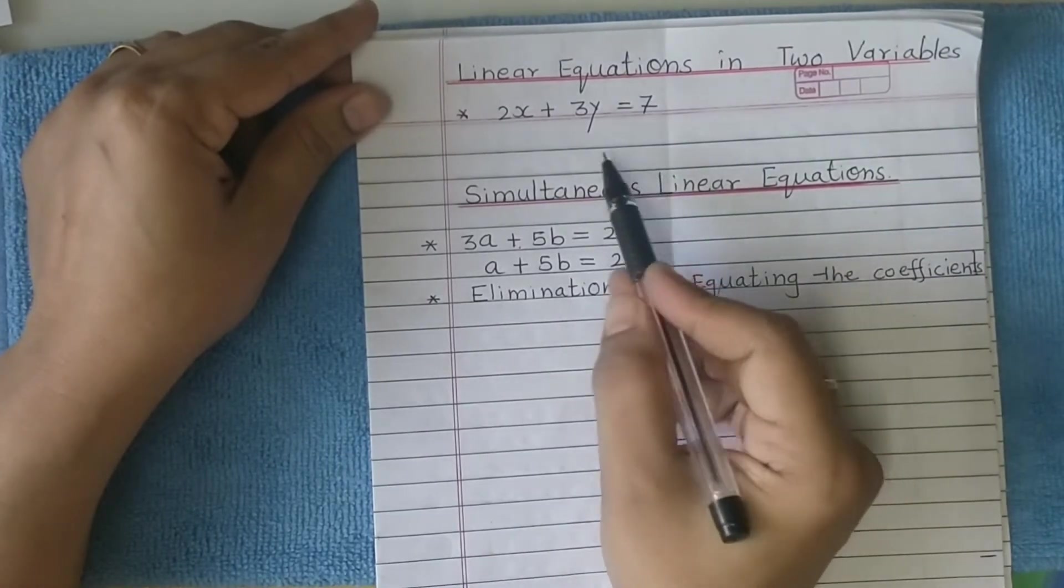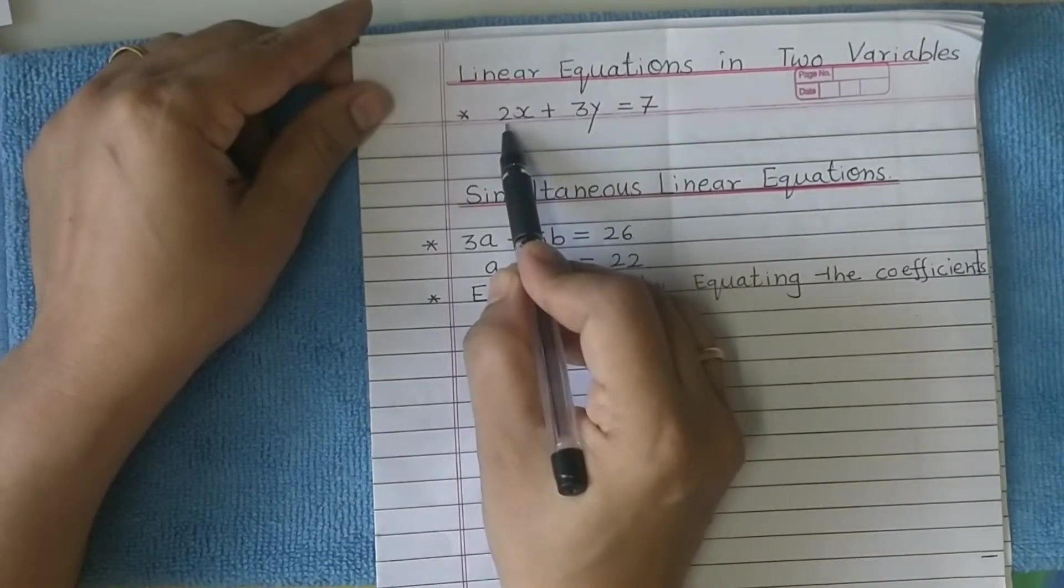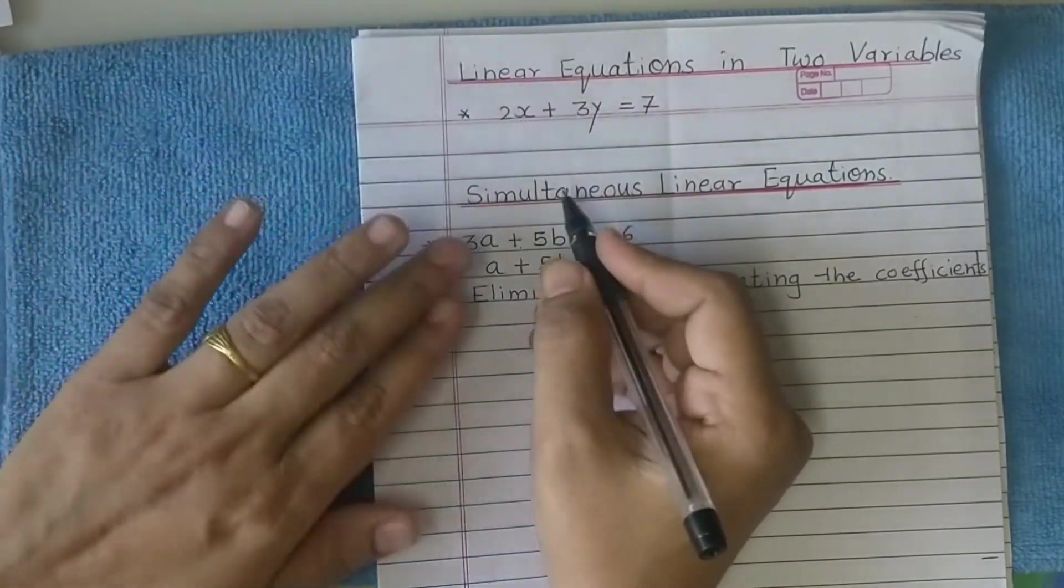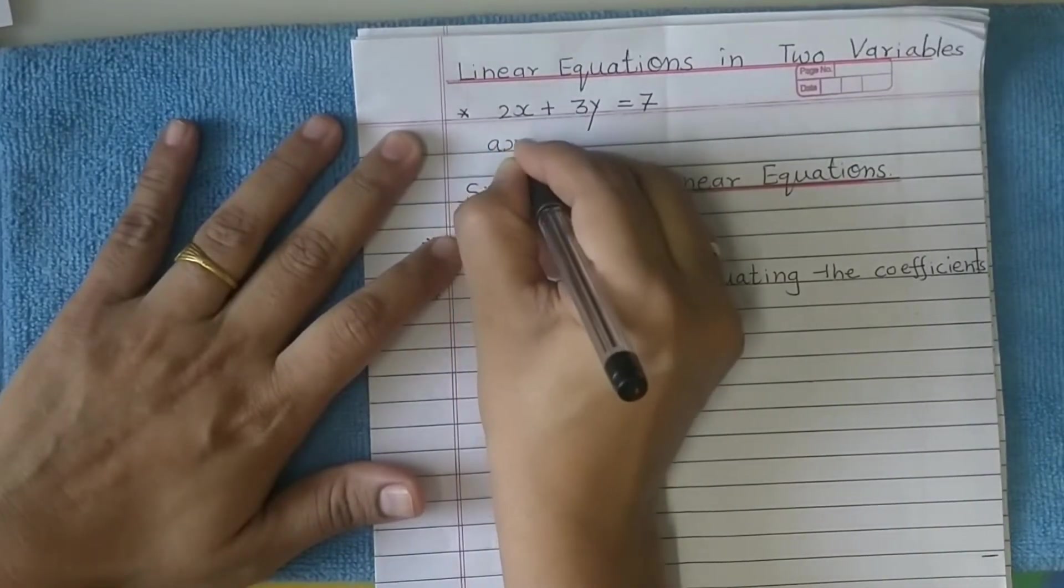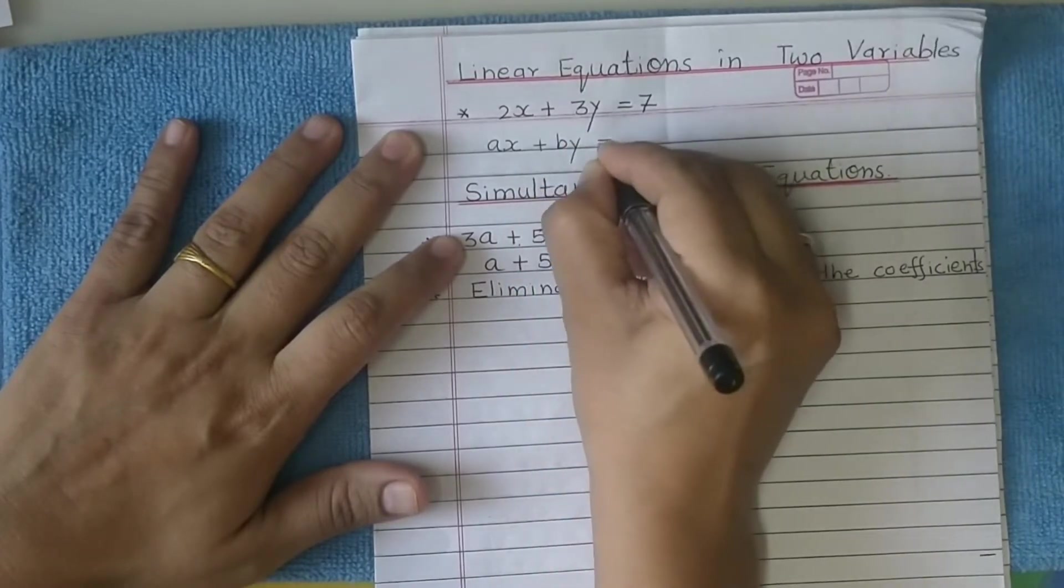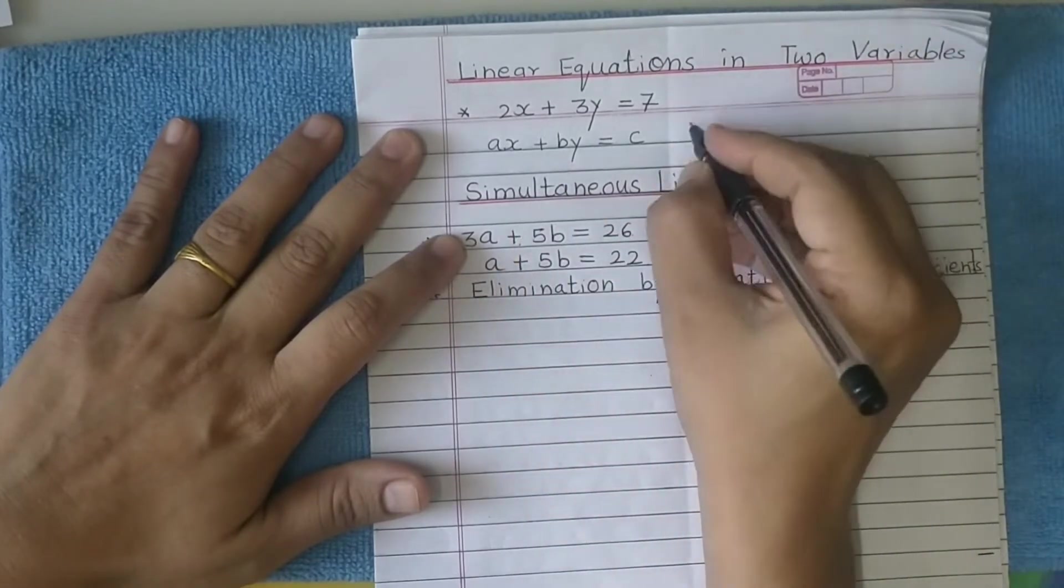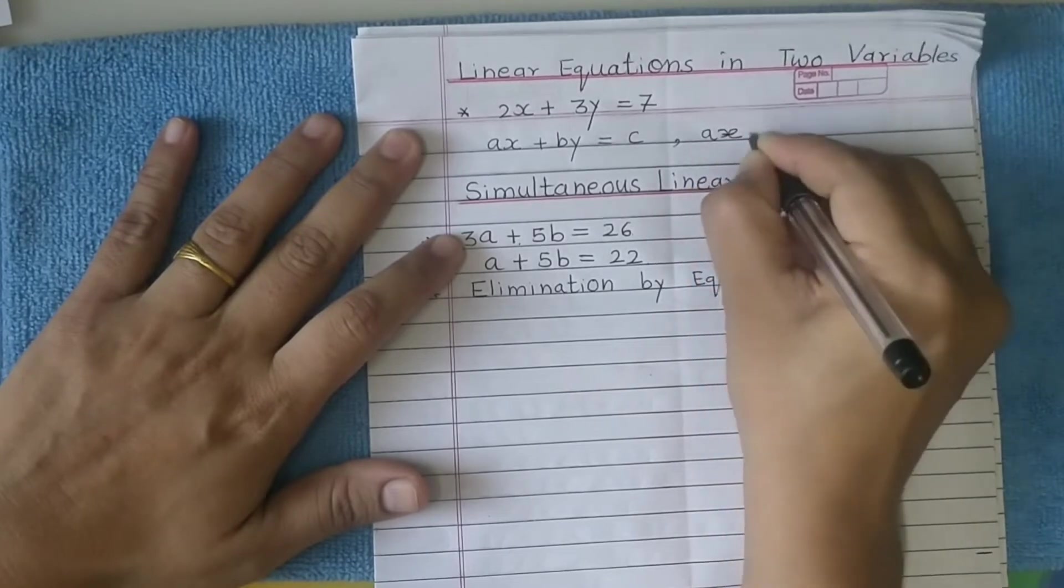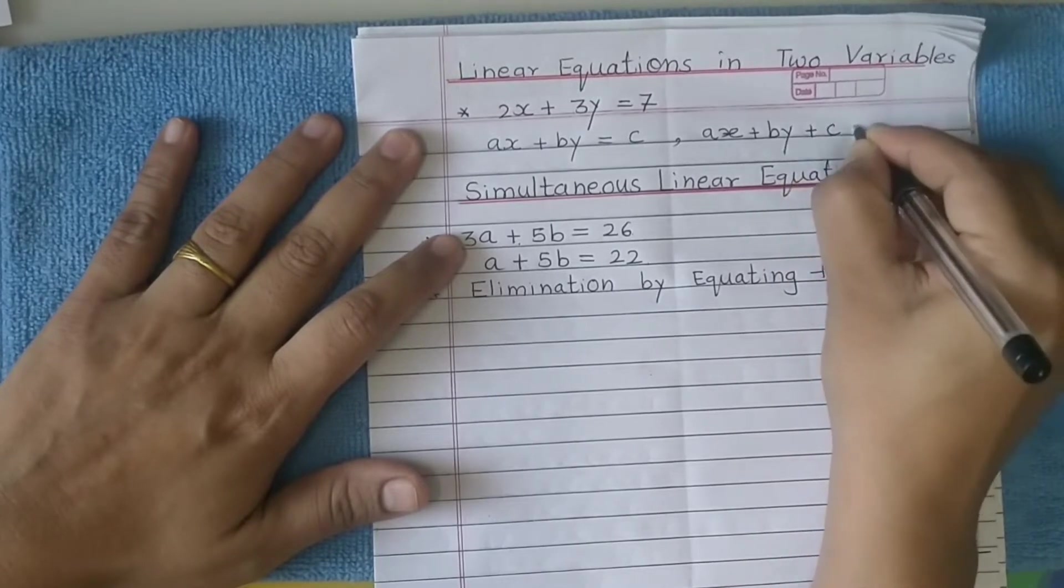You see the degree of the terms containing the variables: 2x has degree 1, 3y has degree 1. Also see the general form of this equation - it is written as ax plus by equals c, or it can also be written as ax plus by plus c equals 0.